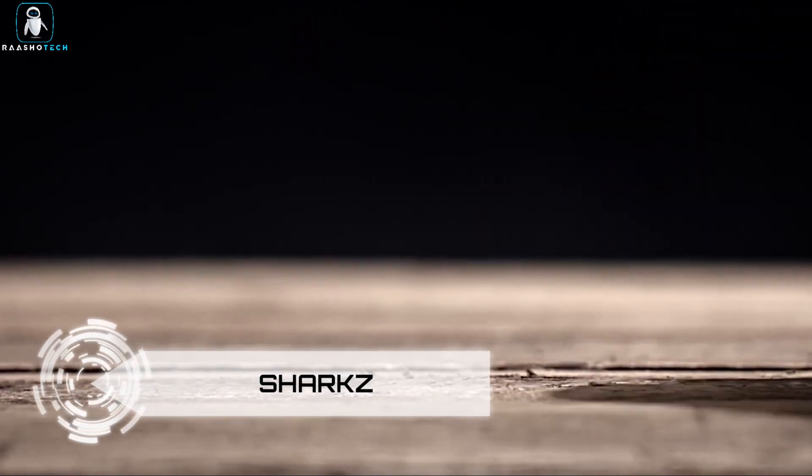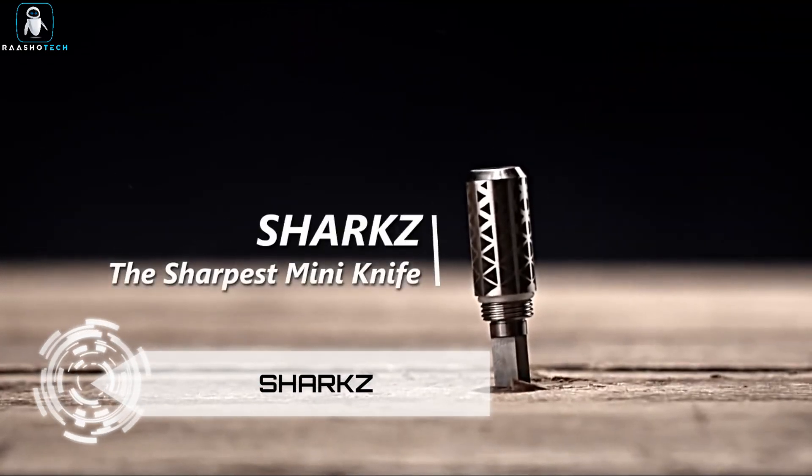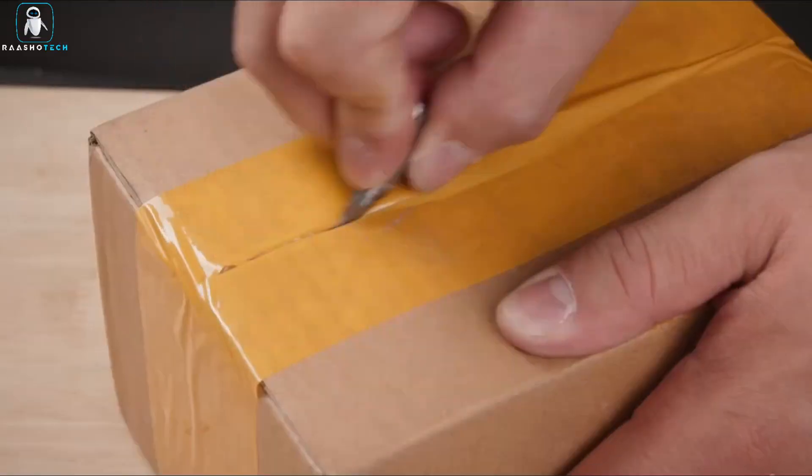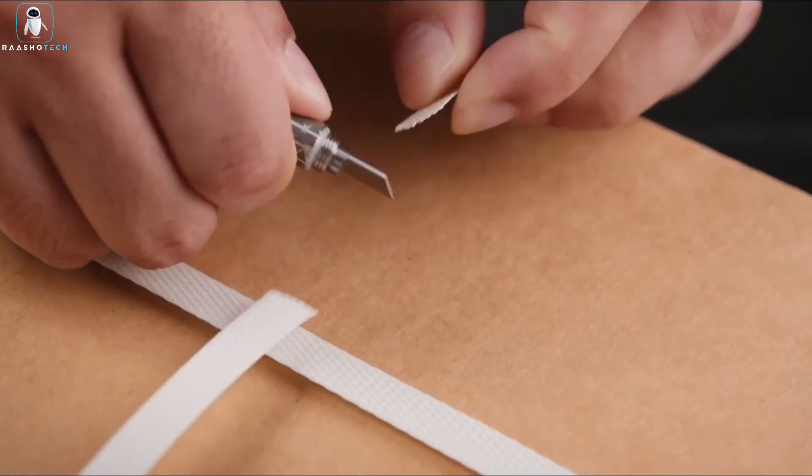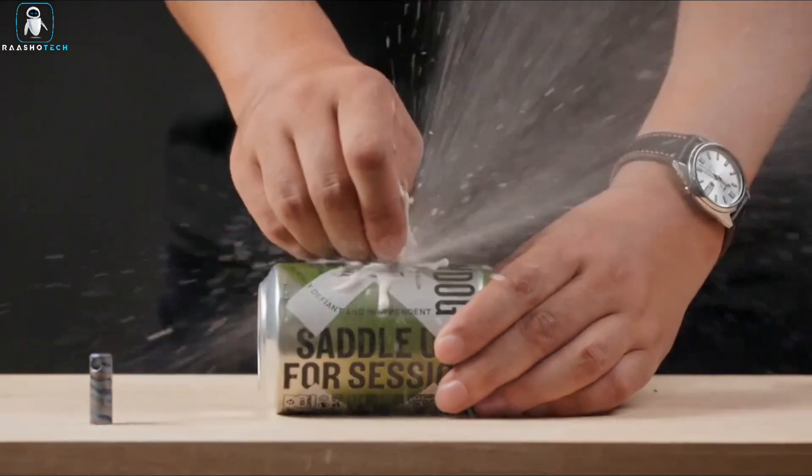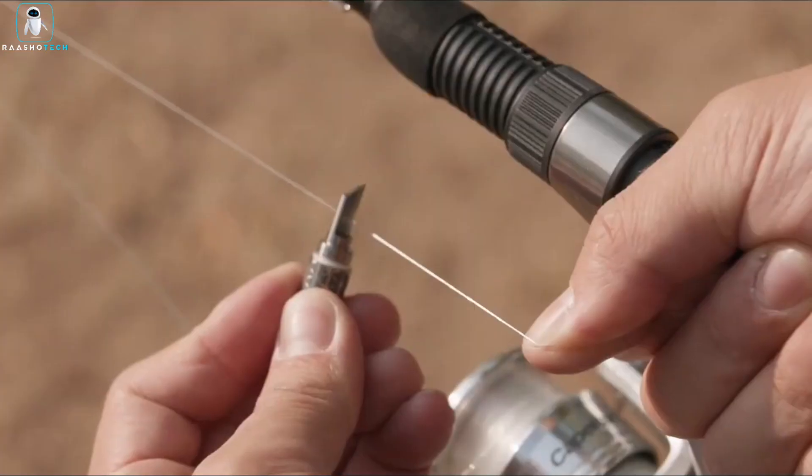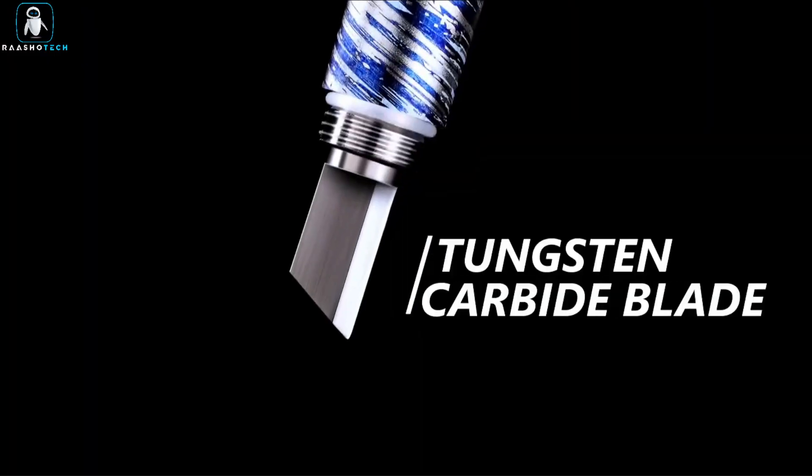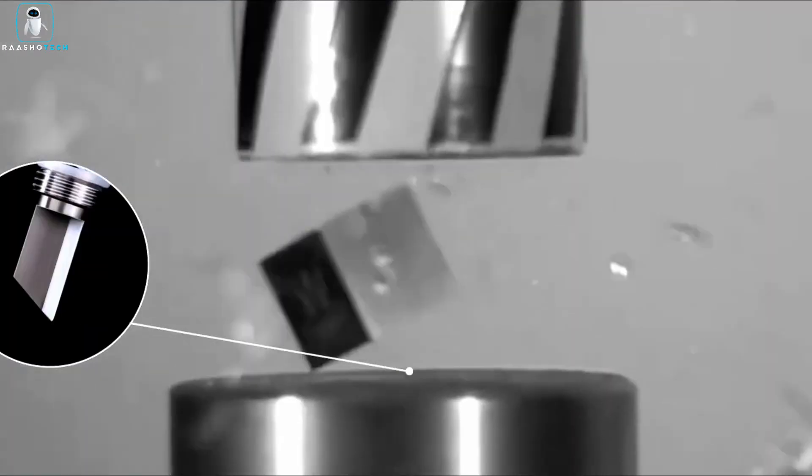Ladies and gentlemen, grab your popcorn because we're about to dive into the world of Sharks, the micro knife that's sharper than a stand-up comedian's wit. Picture this, a tungsten carbide blade so sharp it makes your to-do list nervous. Crafted from grade 5 titanium, this bad boy is practically the superhero of keychain cutters. Waterproof, fireproof, and ready for action.